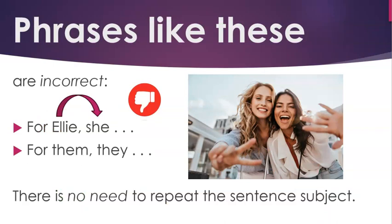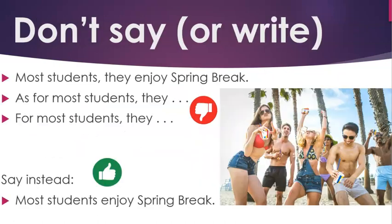Phrases like "for Ellie she" and "for them they" are incorrect. There is no need to repeat the sentence subject. Don't say or write "most students they enjoy spring break," "as for most students they," or "for most students they." Instead, say "most students enjoy spring break."